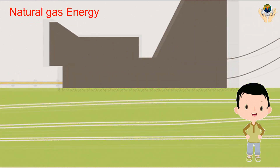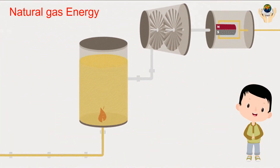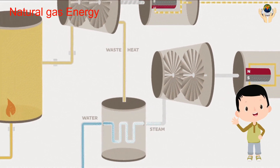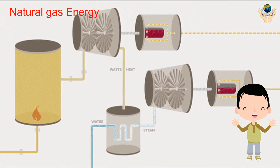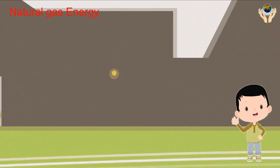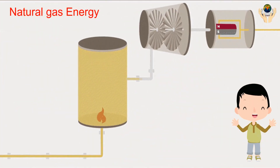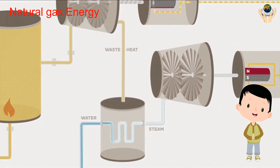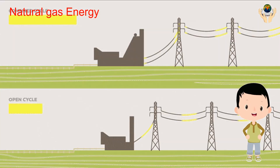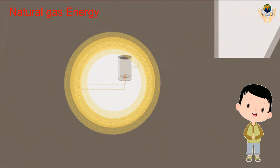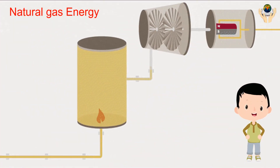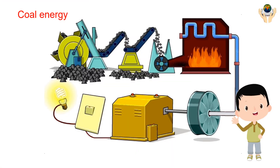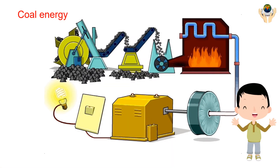Natural gas is a fossil energy source that formed deep beneath the earth's surface. It contains many different compounds; the largest component is methane — a compound with one carbon atom and four hydrogen atoms. Natural gas is used to run turbines, which run a generator to produce electricity.